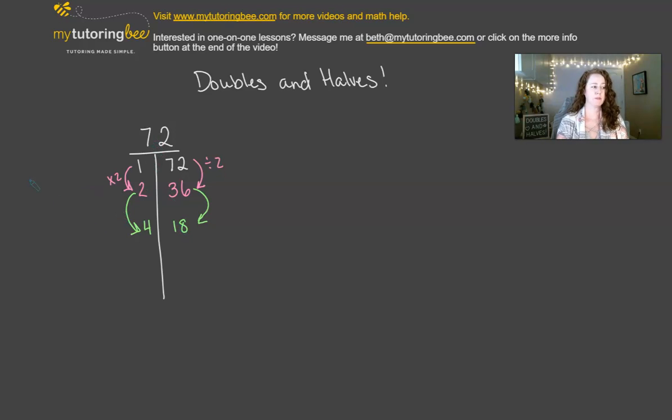Now I left a little space here on purpose because this can even work with triples or quadruples. As long as you triple one number and can evenly divide the other number by 3, then this will still work in the same way. So for example, if we, instead of doubling, if we tripled times 3, then when we do the opposite with 72, we divide by 3, then that gives us 24.